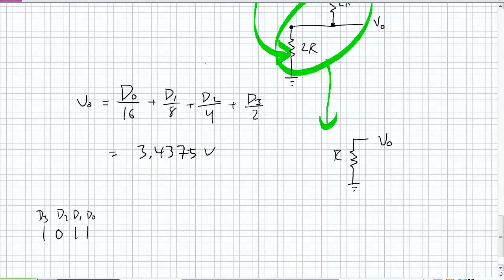For example, 5-bit network, D0 would be D0 divided by 32, D1 divided by 16, D2 divided by 8, D3 divided by 4, D4 divided by 2. So you can potentially expand these networks.